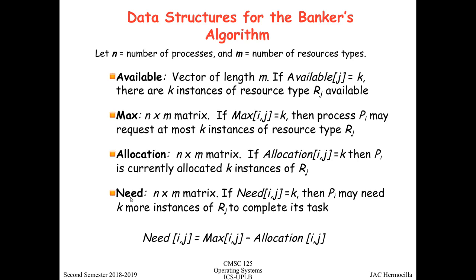Another matrix is 'allocation', an n-by-m matrix where allocation[i][j] equals k means that k instances of resource type j are currently allocated to process i. Lastly, we have a 'need' matrix, also an n-by-m matrix, where need[i][j] equals k means that process i may need k more instances of resource type j to complete its task.